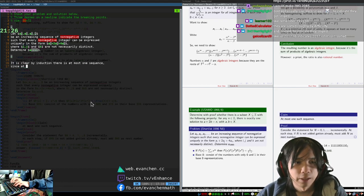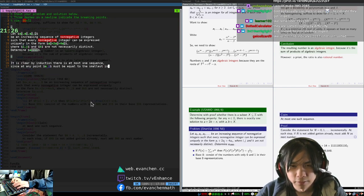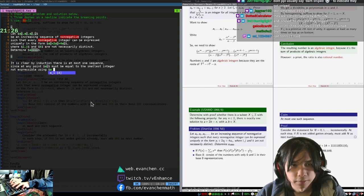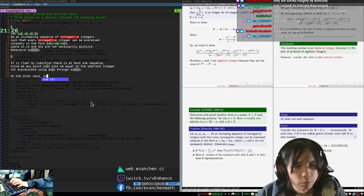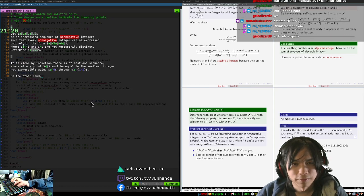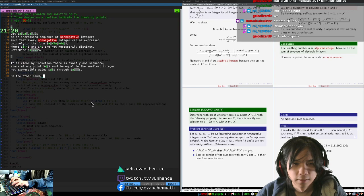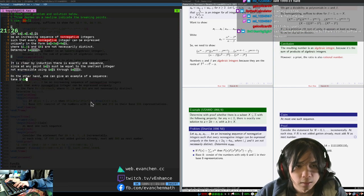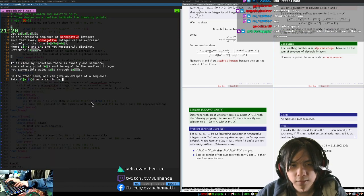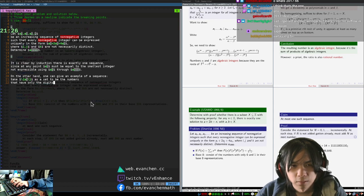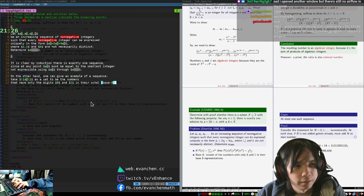Since, at any point, AI must be equal to the smallest integer not expressable using a zero. On the other hand, one sequence exists. In fact, this induction shows it is exactly one sequence. Take AI set to be the numbers that have exactly only the digits zero and one in their octal base eight representation.